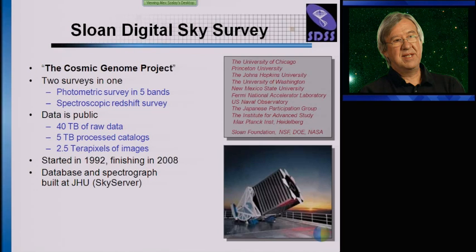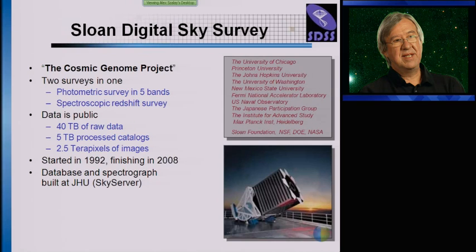The Sloan Digital Sky Survey is sometimes also called the cosmic genome project. It started in 1992 and set out to create the ultimate map of the northern sky. The data is entirely public. The core observational data is about 40 terabytes of raw data, about 5 terabytes of processed catalogs, and about 2.5 terabytes of corrected images. By the time we actually archived all these, there was a factor of 2 or 3 multiplier on every one of those.